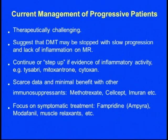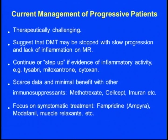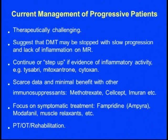Currently we largely focus on symptomatic management. We often give patients dalfampridine (Ampyra), which is FDA-approved for treating walking disabilities, and it may help improve walking speed and endurance. We also use modafinil for fatigue and baclofen for spasticity. Occupational and physical therapy and rehabilitation are beneficial at any stage of MS, not particularly only in progressive MS.